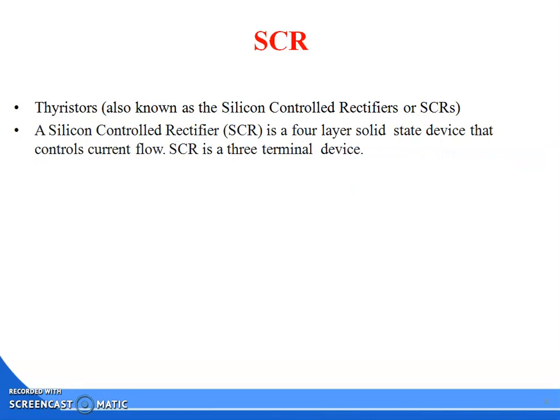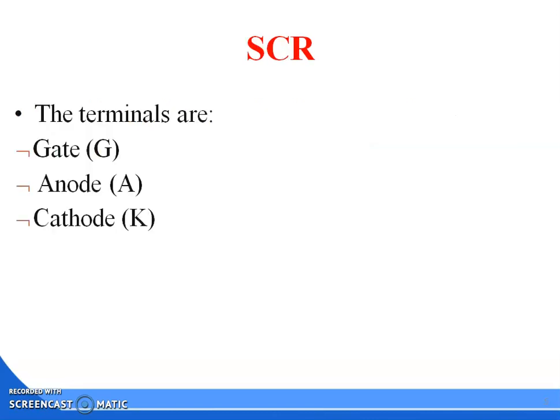Thyristor, also known as Silicon Controlled Rectifiers or SCRs. The Silicon Controlled Rectifier is a four-layer solid state device that controls current flow. SCR is a three-terminal device. The three terminals are anode denoted by capital A, cathode denoted by capital K, and gate denoted by G.